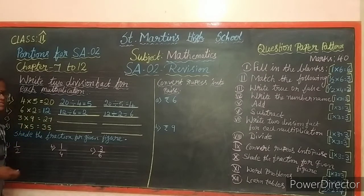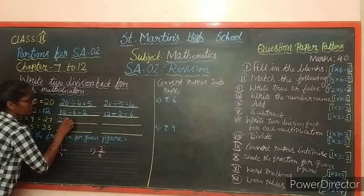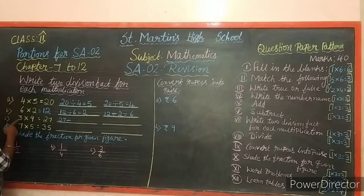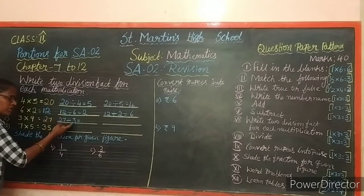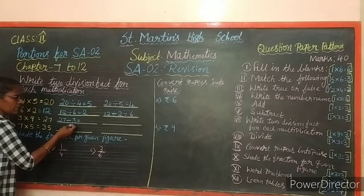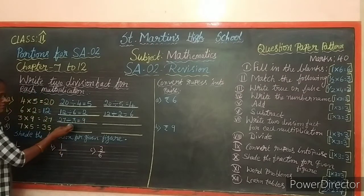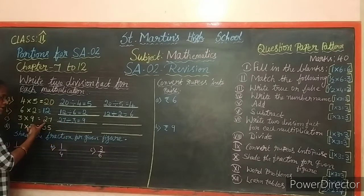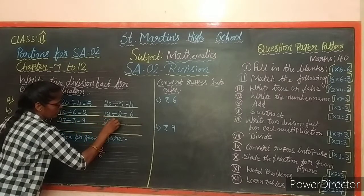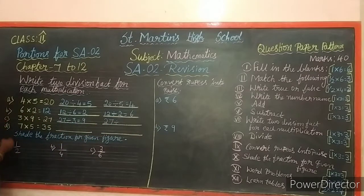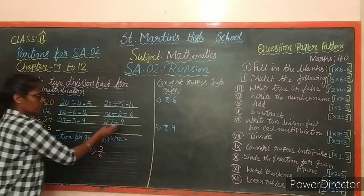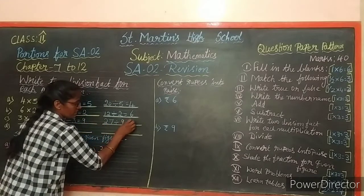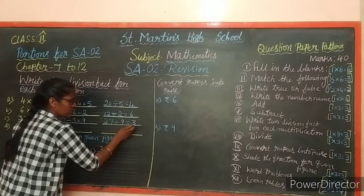Next: 3 nines are 27. First division fact: 27 divided by 3 - using 3 times table, 3 nines are 27, quotient is 9. Second division fact: 27 divided by 9 - using 9 times table, 9 threes are 27, quotient is 3.